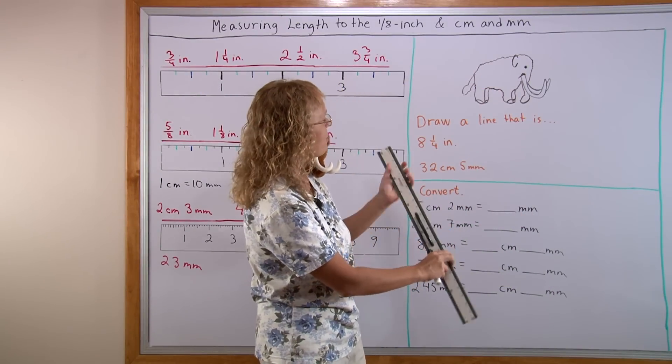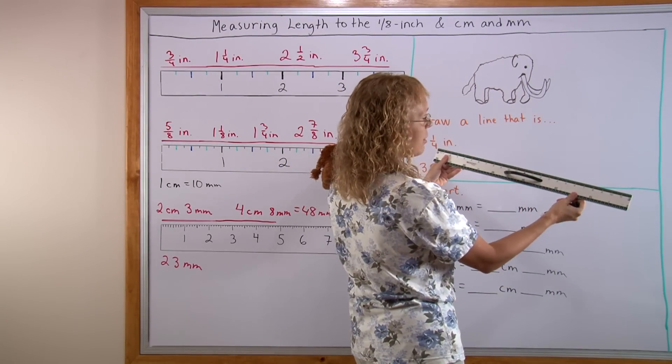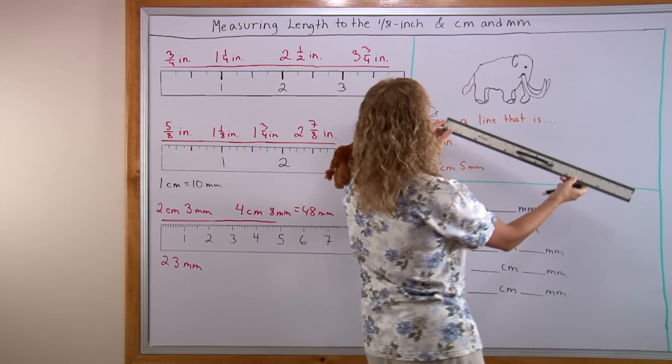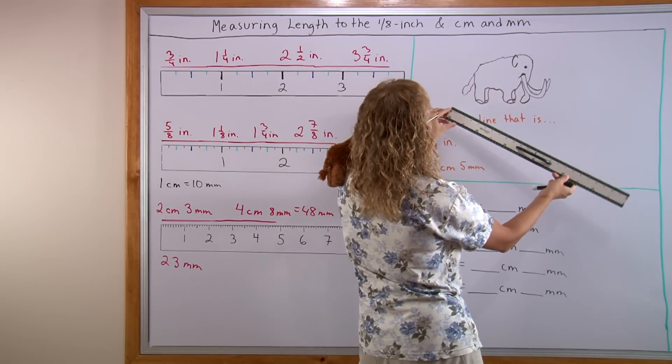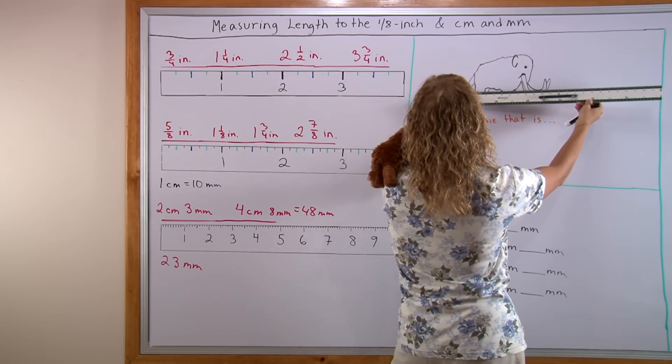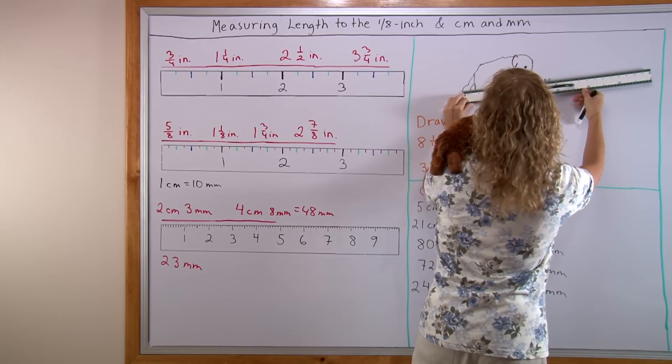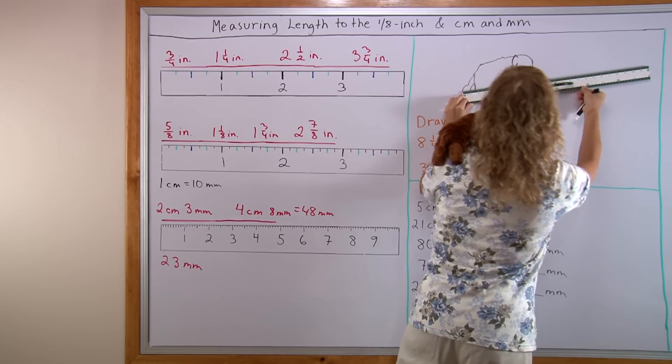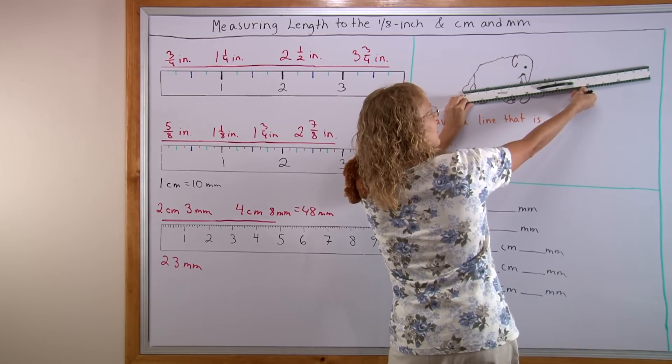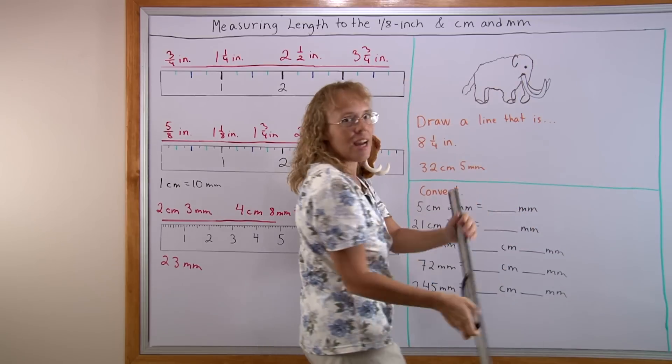I'm going to use this ruler and first measure in inches. Let's just measure the longest distance I can find from the tip of the tail till the tusks. You may not be able to see it. But it is 11 and a half inches.